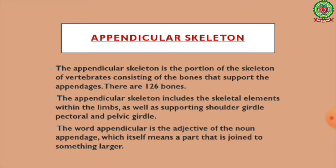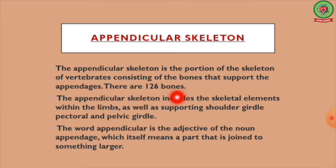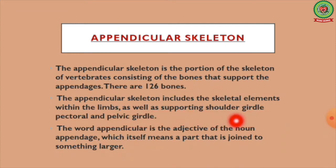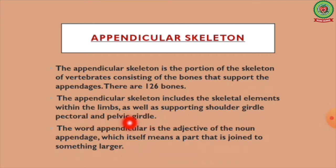Starting with the appendicular skeleton: the appendicular skeleton is the portion of the skeleton of vertebrates consisting of the bones that support the appendages. There are 126 bones. The appendicular skeleton includes the skeletal elements within the limbs as well as the supporting shoulder girdle, pectoral girdle, and pelvic girdle.